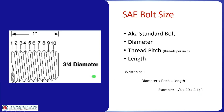The three things we're going to use are our diameter, our thread pitch — which is threads per inch — and then the overall length of the bolt.